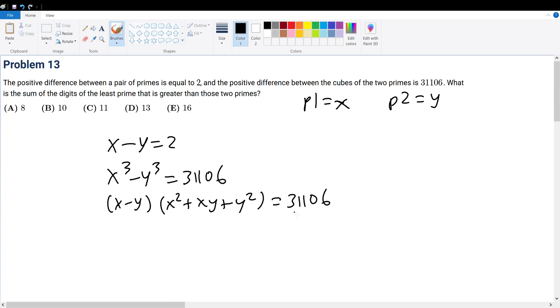Since x minus y equals 2, we can divide both sides by 2 to get x squared plus xy plus y squared equals 15553.